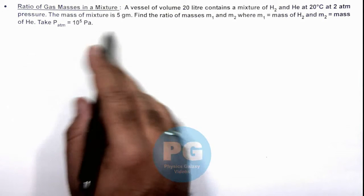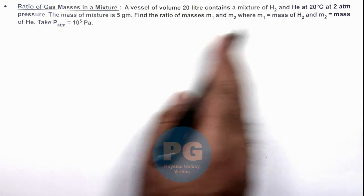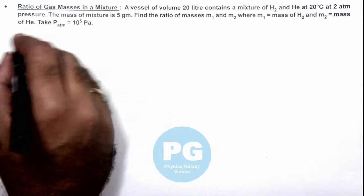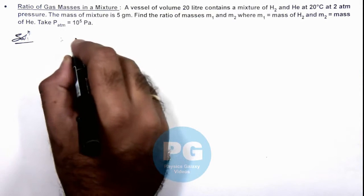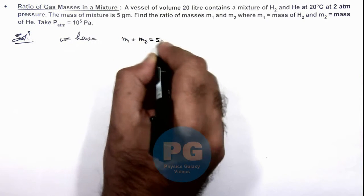The mass of mixture is 5 gram and we are required to find the ratio of masses m1 and m2, where these are the masses of hydrogen and helium. Now in solution, we have m1 plus m2 is equal to 5 grams.